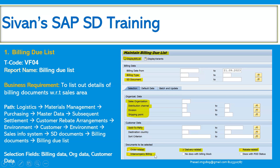For intercompany billing, whenever the intercompany sales transactions happen, you can choose the option intercompany billing so that those intercompany-related outbound deliveries will also be displayed on the screen. Then we can process them whether it is to be processed individually or collectively — that is the decision of the business, how they want to do it from their end.